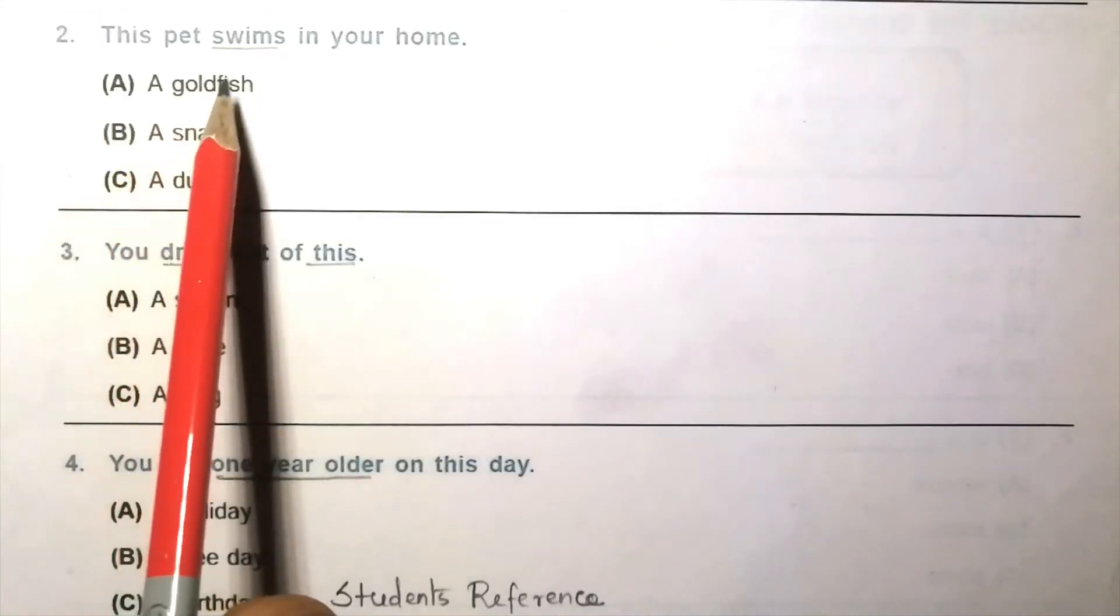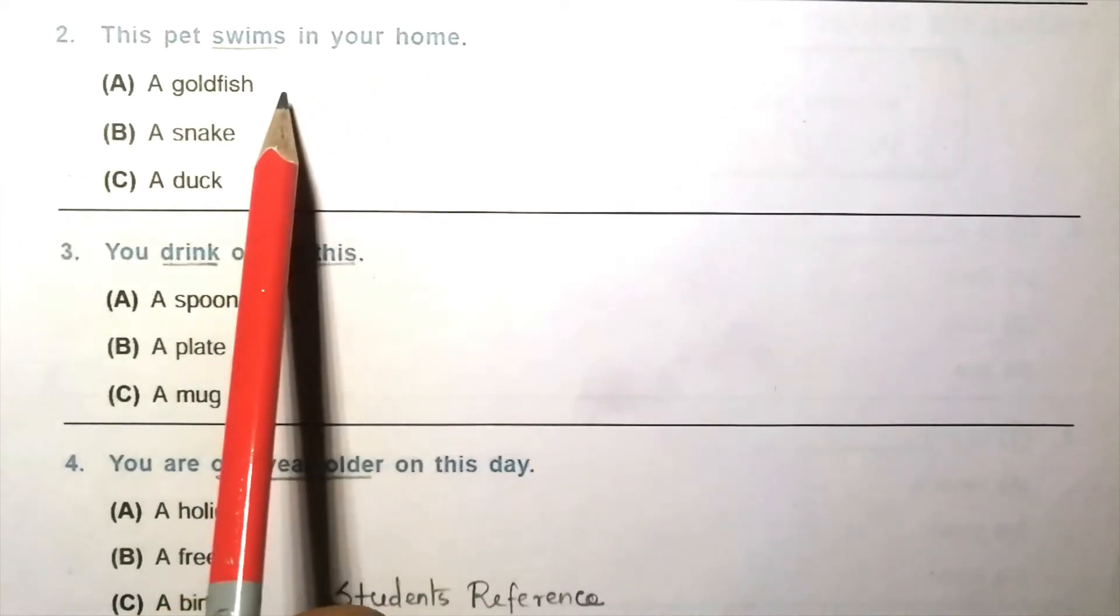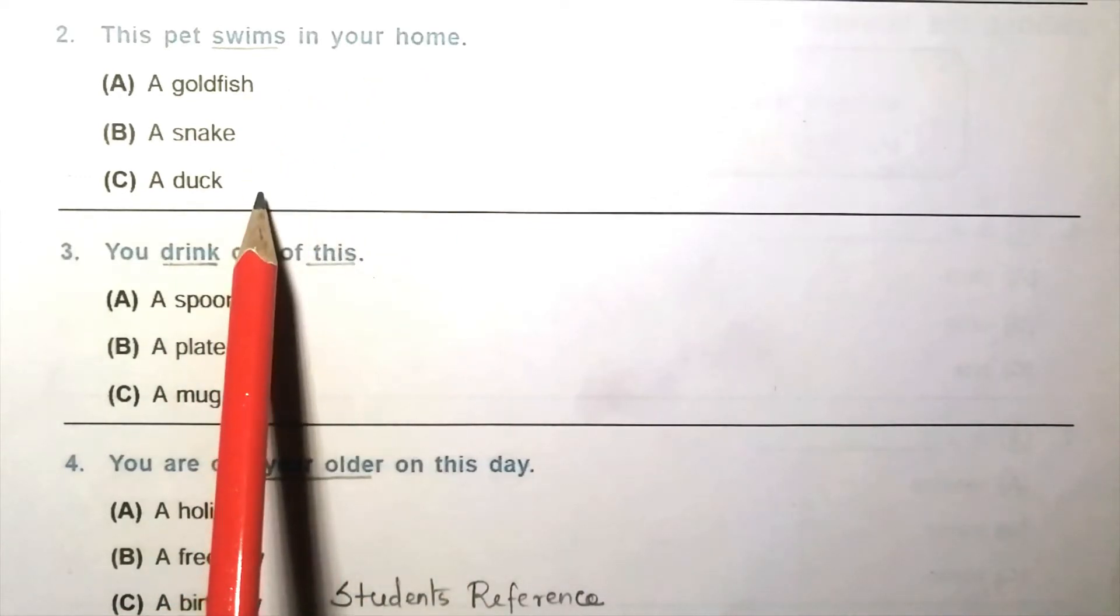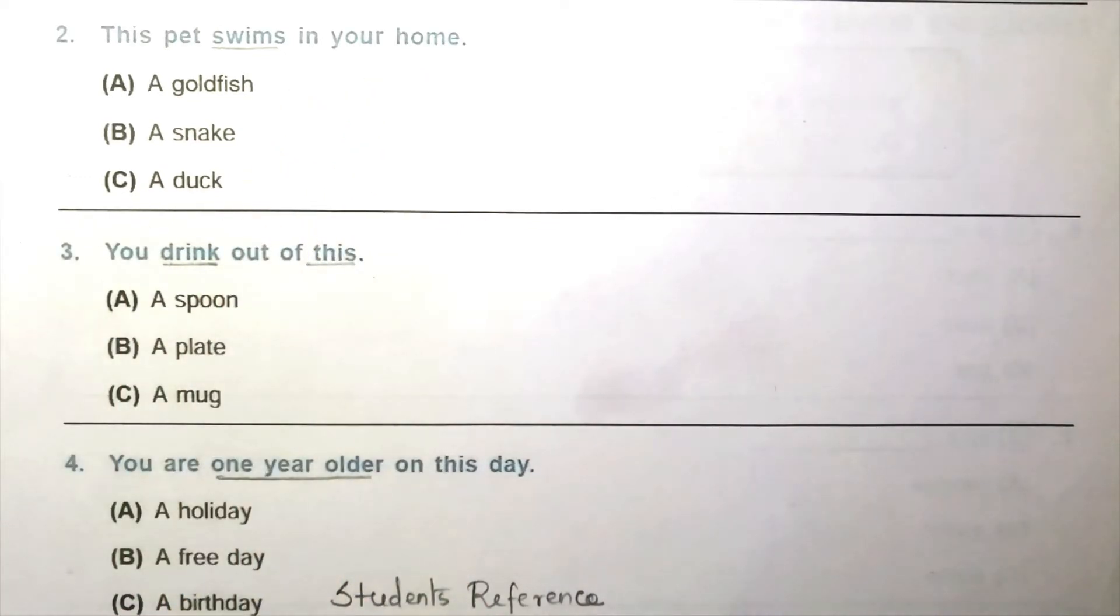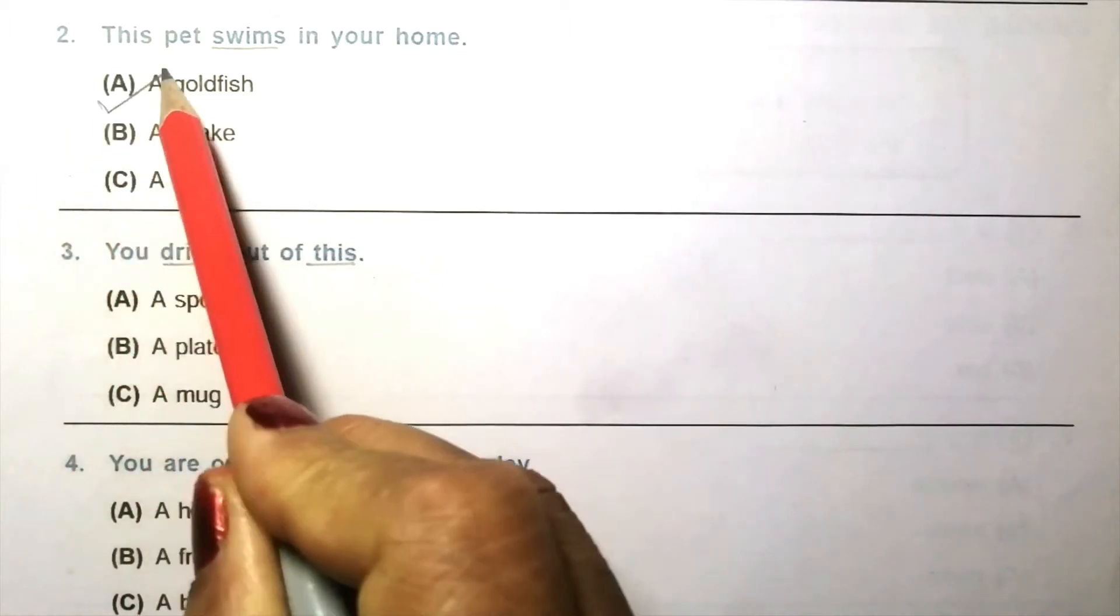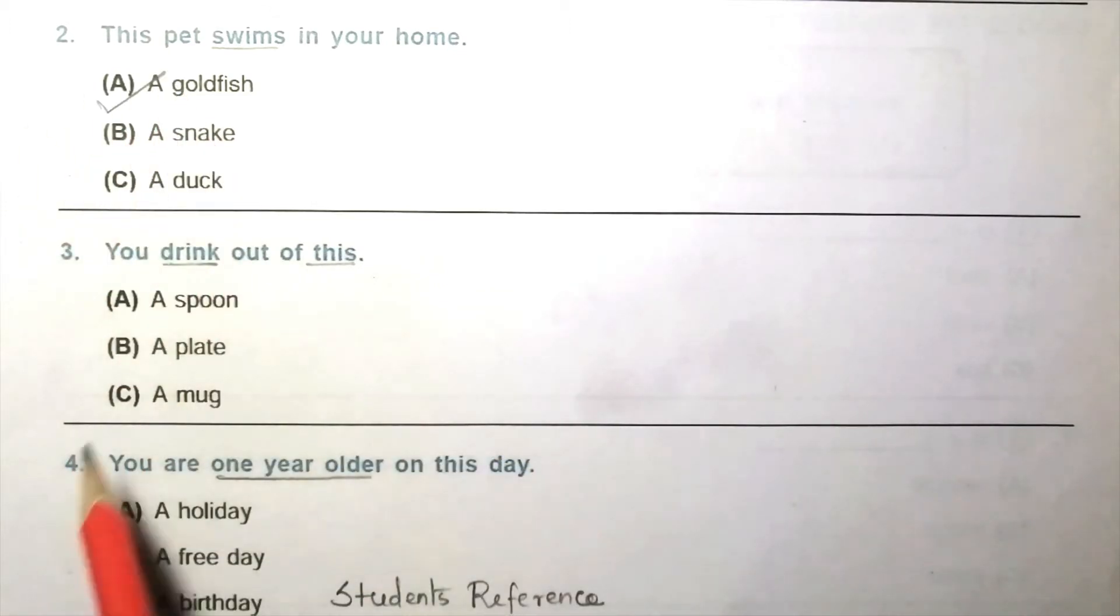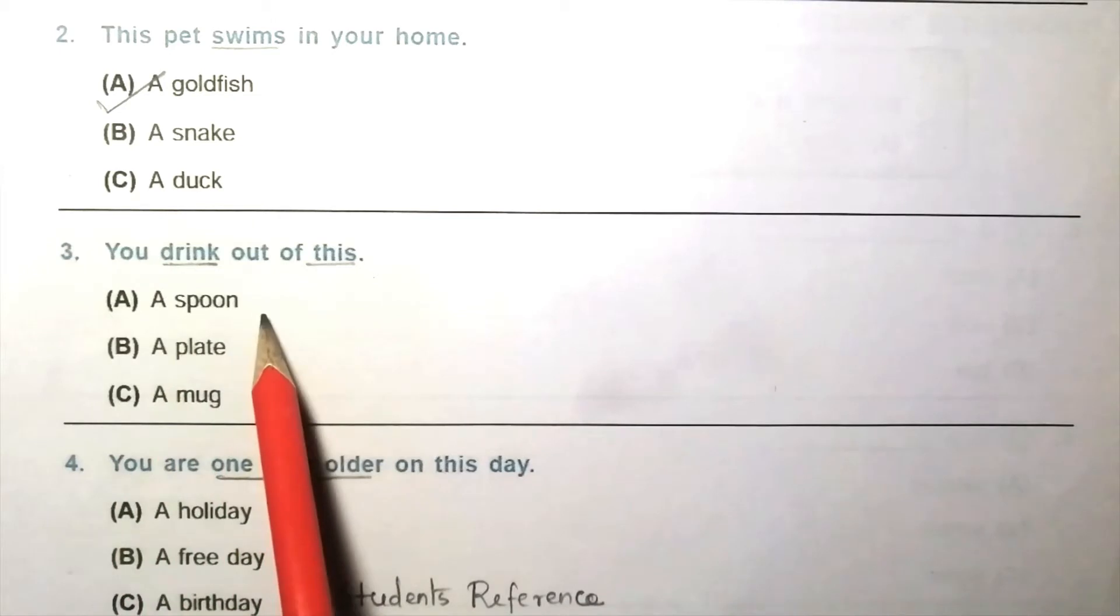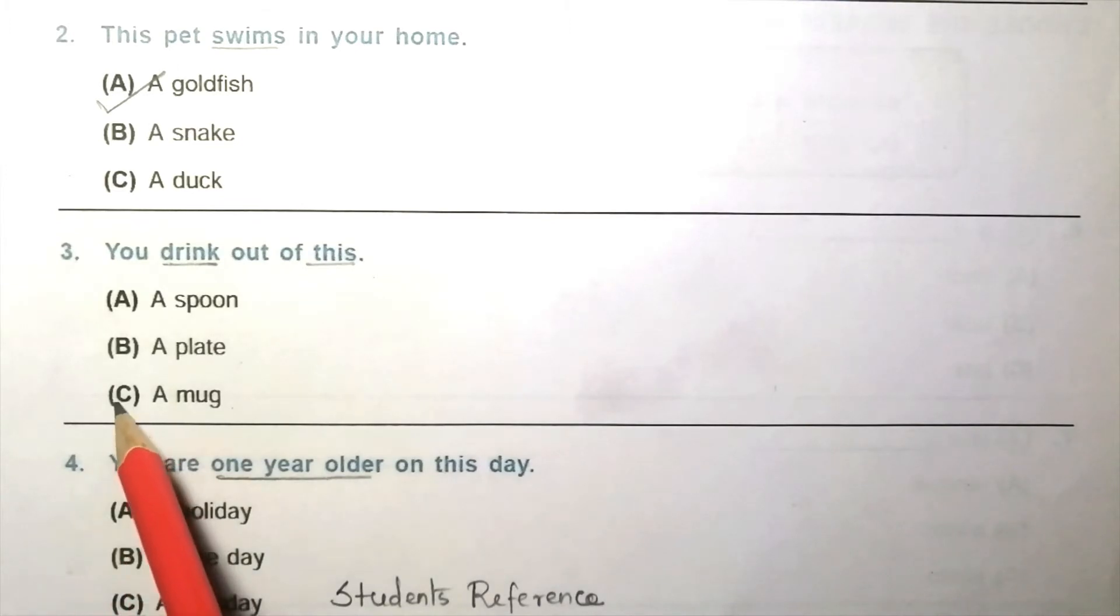Question 2: This pet swims in your home. A goldfish, a snake, a duck. The answer is A, a goldfish. Question 3: You drink out of this. A spoon, a plate, a mug. The answer is C, a mug.